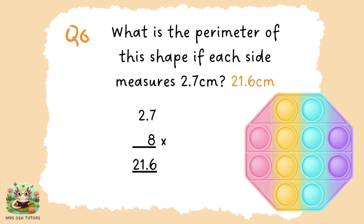There were eight sides — this is an octagonal shape. So we needed to multiply 2.7 by 8. You can do that using the column method. Remember, when we multiply with decimals, the number of digits after the decimal point in the question is how many digits will be after the decimal point in the answer. So we know the answer is 21.6, with only one digit after the decimal point because there's only one digit after the decimal point in 2.7 — the 7. You could also use approximation and think it's roughly 3 times 8, so it's going to be somewhere around 24. It's not going to be as big as 240 and not as small as 2.4.